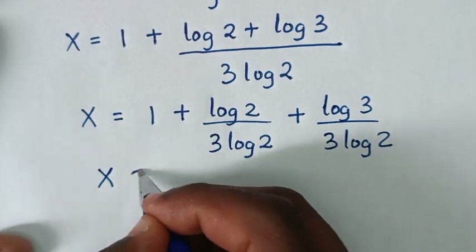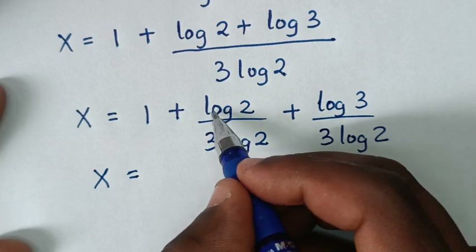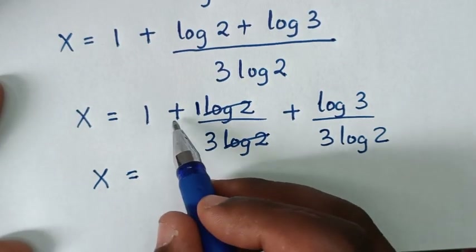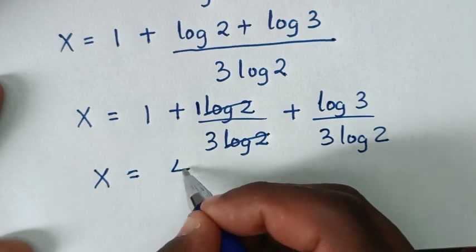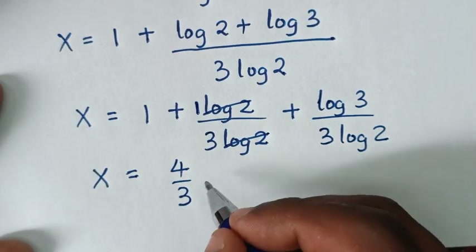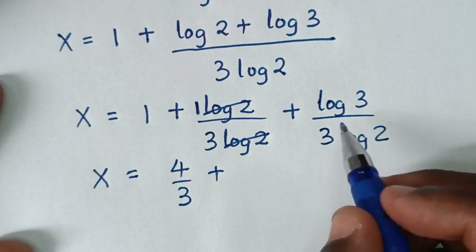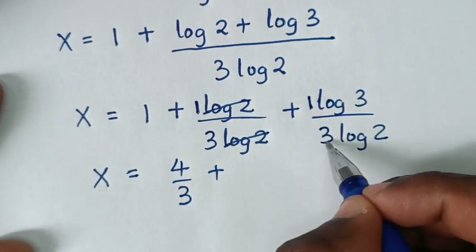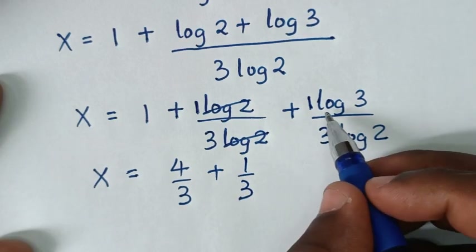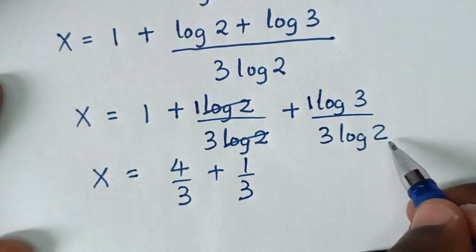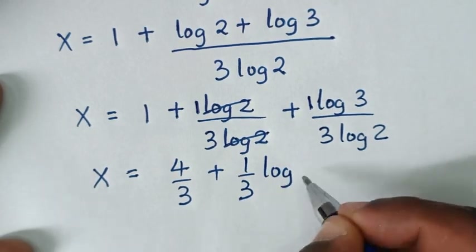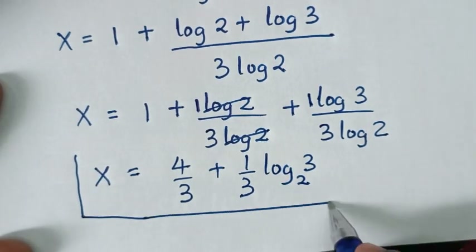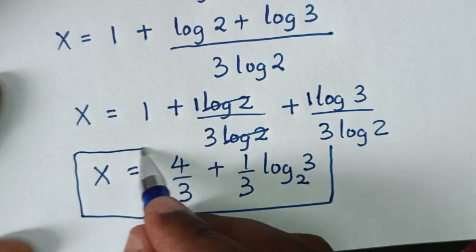Then it will be x is equal to: here log of 2 will cancel this log of 2, so it will be 1 over 3. So 1 plus 1 over 3 is 4 over 3, then plus — here it will be 1 over 3 — times log of 3 over log of 2, which is the same as log of 3 base 2. So this is the final answer for the value of x.